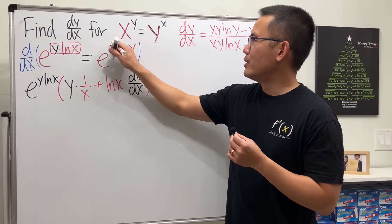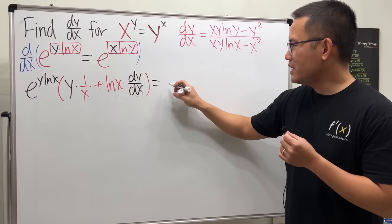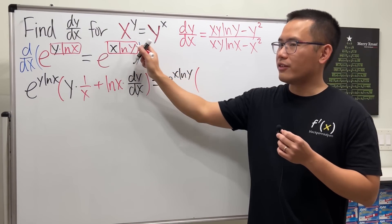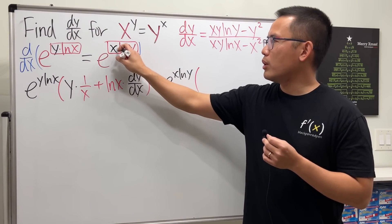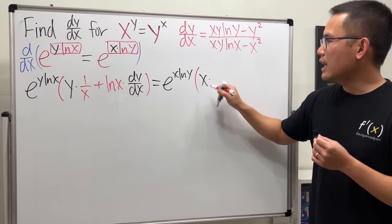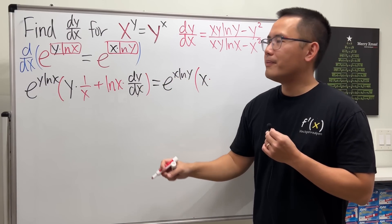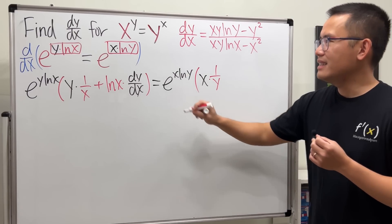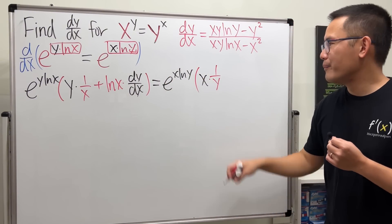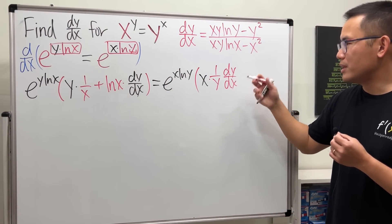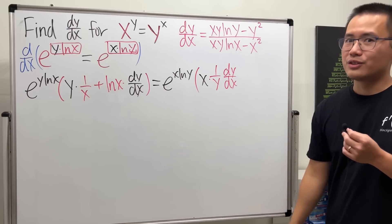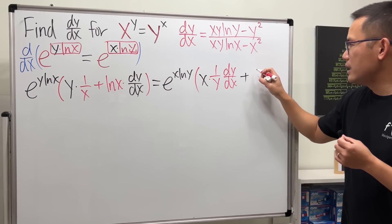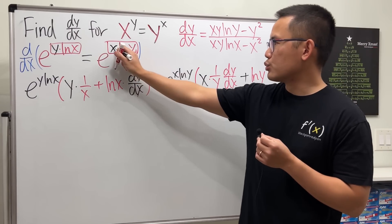Then we add the second function times the derivative of the first. Since y is a function of x, the derivative of y with respect to x is exactly the dy/dx we're trying to get. On the right hand side, the derivative of e to the box repeats first, then multiply by the derivative of the box — product rule again: keep the first function times the derivative of the second, and the derivative of ln y is 1 over y, then multiply by dy/dx from the chain rule.